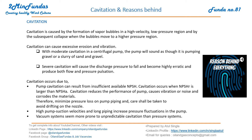Cavitation reduces the performance of the pump, causes vibration, noise, and erosion of material. Therefore, minimize pressure loss on pump piping, and care shall be taken to avoid drifting of the nozzle. That's why the suction line should be minimum in length. High pump suction velocities and long piping increase pressure fluctuation in the system. High velocity and low pressure regions will be there because of long pipe between source and destination point, causing cavitation.